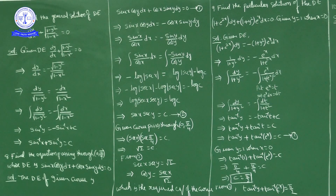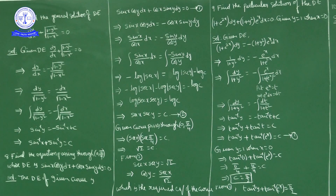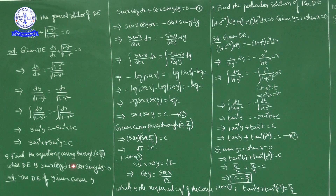Question number 8: find the equation of the curve passing through (0, π/4), whose differential equation is sin x cos y dx + cos x sin y dy = 0.